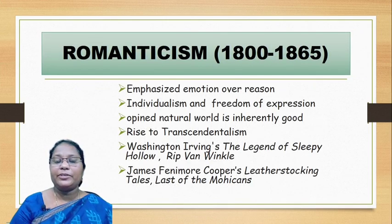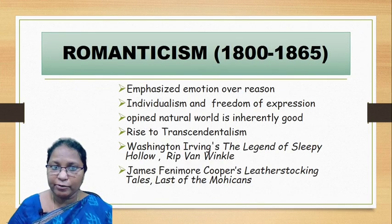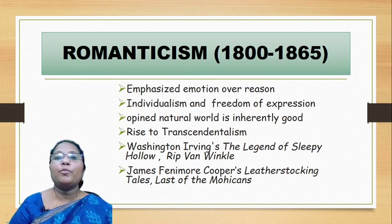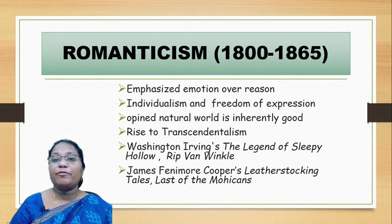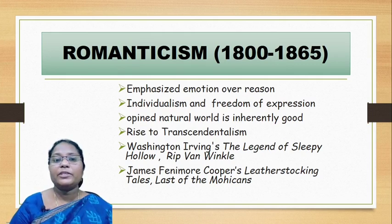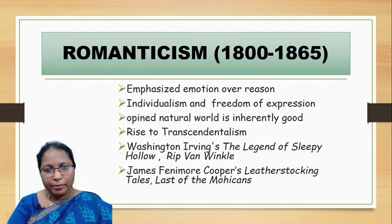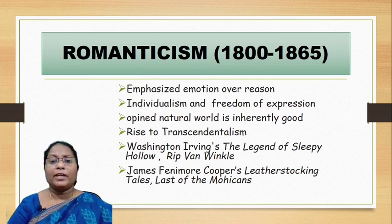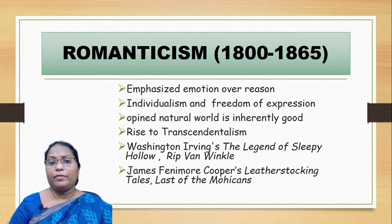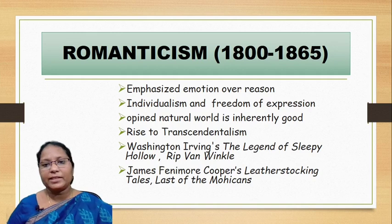Romanticism traces back to 1800 to 1865. It emphasized emotion over reason; individualism and freedom of expression were given utmost priority. Romantics strongly believed that the natural world is inherently good. During this Romantic period, Edgar Allan Poe's writings reflected the Romantic appeal. This period also gave rise to transcendentalism, represented by Ralph Waldo Emerson, Margaret Fuller, and Henry David Thoreau.